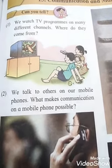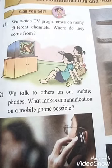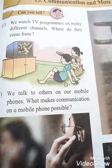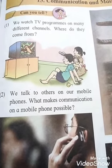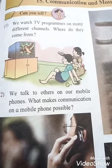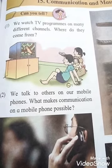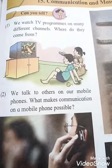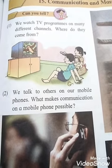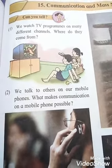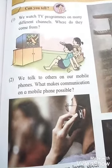Second question: we talk to others on our mobile phone. What makes communication on a mobile phone possible? We can talk to people who are very far away from us, not only in our own country but also in different countries. This is possible because of artificial satellites.